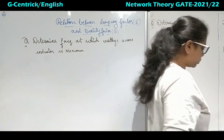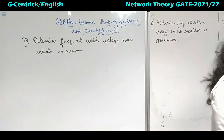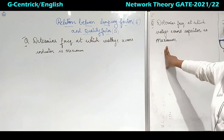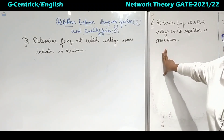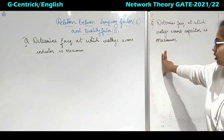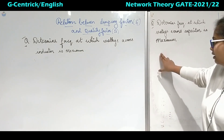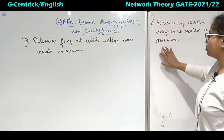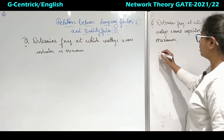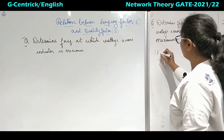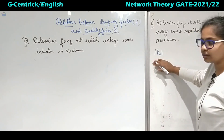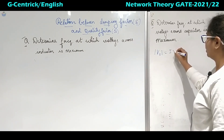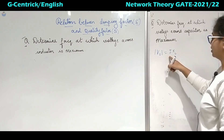The first question is: determine the frequency at which voltage across the capacitor is maximum. Whenever you apply a maxima or minima application, you equate the derivative to zero. So here we have to do the same thing. We know that the voltage across the capacitor — taking only the magnitude — is nothing but I into XC.